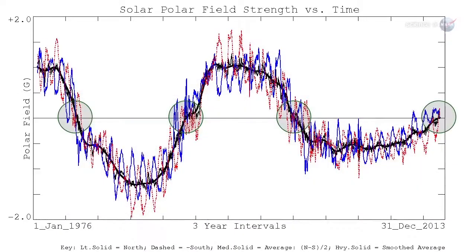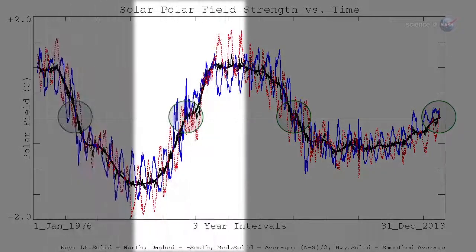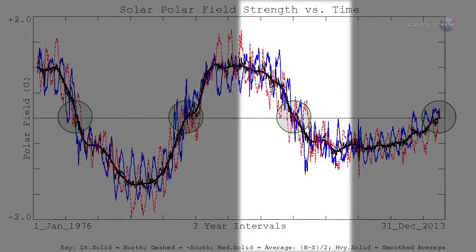Magnetograms at Wilcox have been tracking the Sun's polar magnetism since 1976, and they have recorded three grand reversals, with a fourth in the offing.